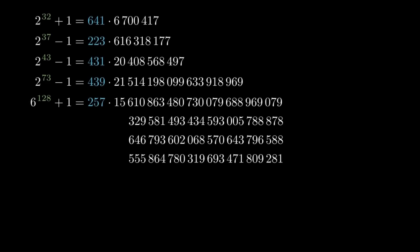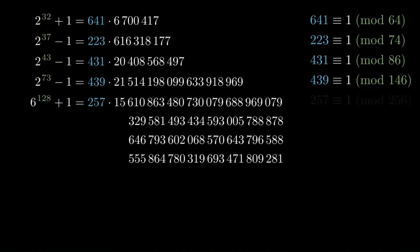All right, now, let's go back to that original list of huge numbers. So I have highlighted the exponents in green and the small, well, relatively small prime factors in blue. And in each case, sure enough, that prime factor is always 1 more than a multiple of twice the exponent. So 641 is 1 mod 64, 223 is 1 mod 74, and so on. So this gives us a relatively fast way of checking for prime factors.